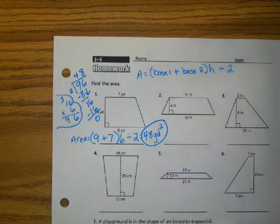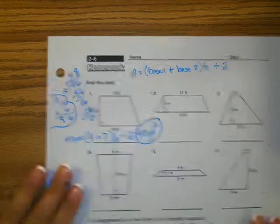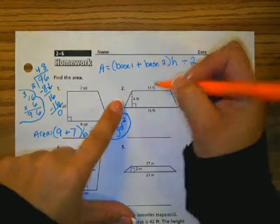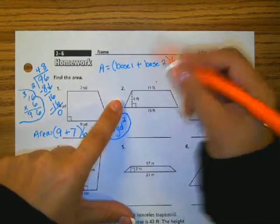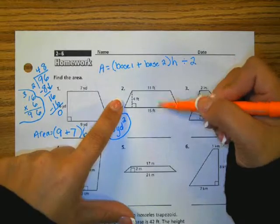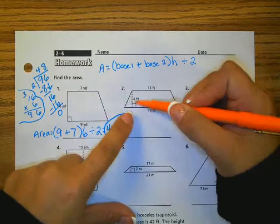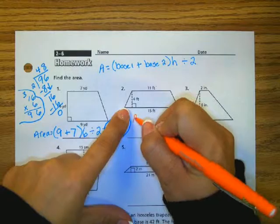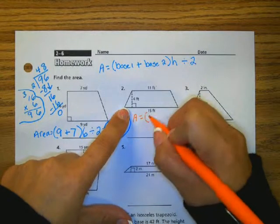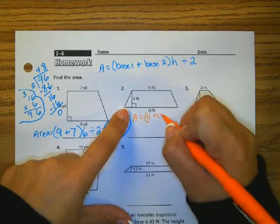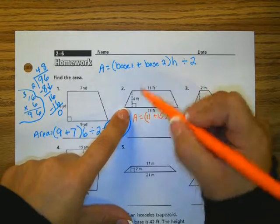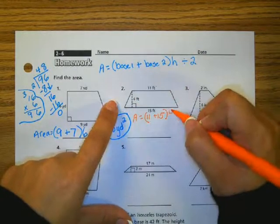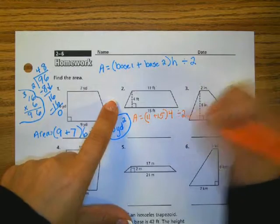Let's take a look at number 2. Again, I have a trapezoid, so I'm going to use my formula. I'm going to use orange for this problem so you can see my work. The base is 11, and we also have a base of 15. My height is 4. So to write out my formula, I could say A equals 11 plus 15, base 1 and base 2, times my height of 4, divided by 2.